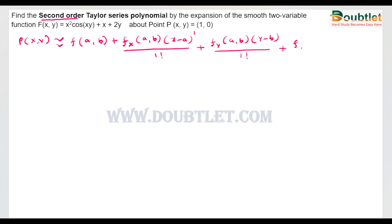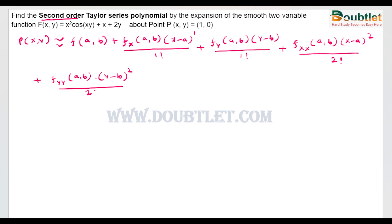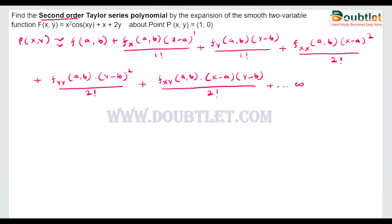To find the second order, we need the second-order derivatives. This gives us fxx(a, b) multiplied by (x − a)² divided by 2 factorial, plus fyy(a, b) multiplied by (y − b)² divided by 2 factorial, plus fxy(a, b) multiplied by (x − a)(y − b) divided by 2 factorial. This series continues to infinity, but since we need only the second-order polynomial, we stop here.